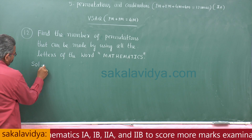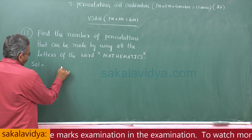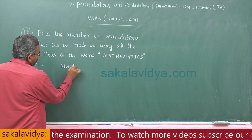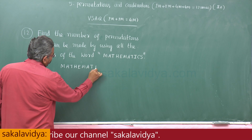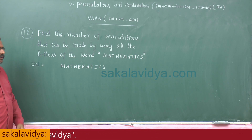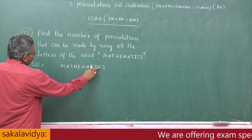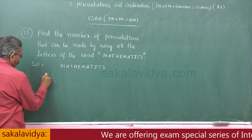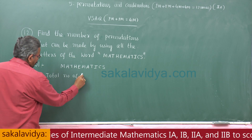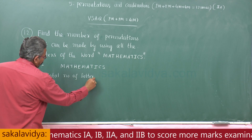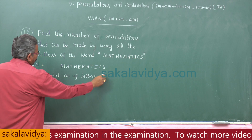In the word MATHEMATICS: M-A-T-H-E-M-A-T-I-C-S. The total letter count is 1, 2, 3, 4, 5, 6, 7, 8, 9, 10, 11. So there are 11 total letters.